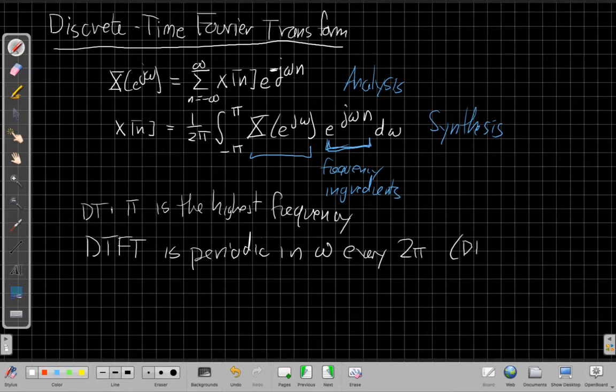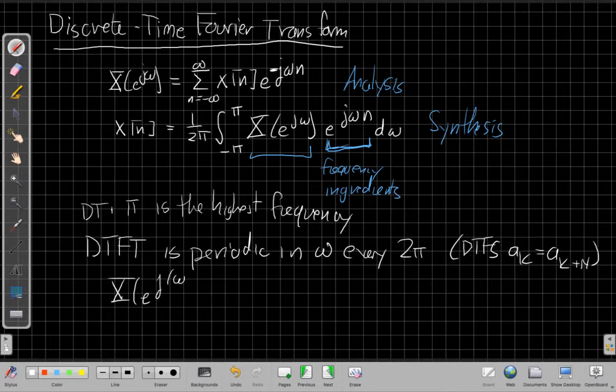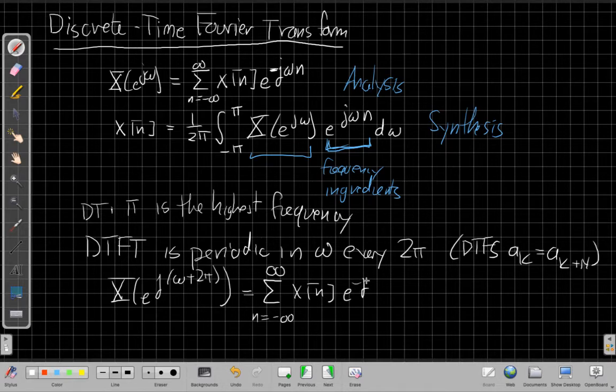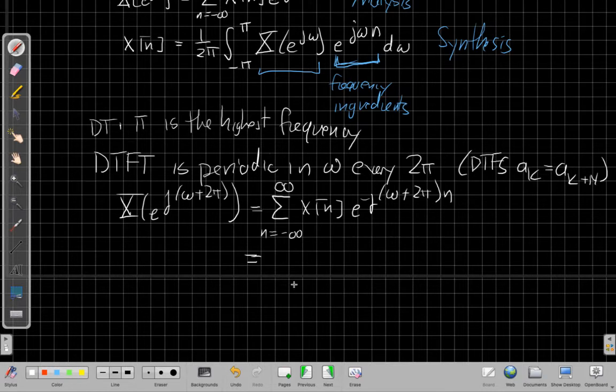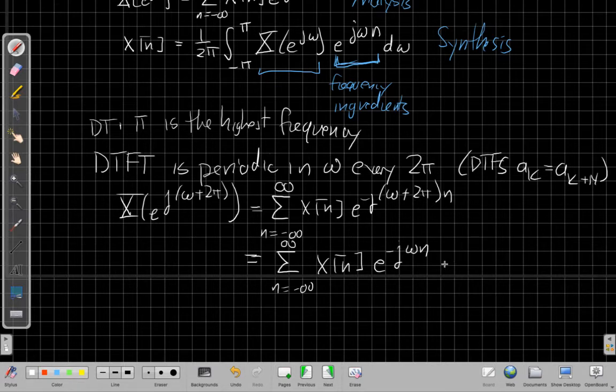This is sort of like the way that for the DTFS, the coefficients were periodic in k the same way they were periodic in time. To see why this must be true, we can start from that sum up above. If I add 2π to omega, I can plug in and see that what I get is sum of x[n]e^(-j(ω+2π)n). If I use properties of exponentials, I can distribute it through, and then I have a sum of two things in an exponent, and I can rewrite that as a product of the same base with the two exponents. So I can say this is like x[n]e^(-jωn) times e^(-j2πn).